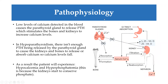Normally, low levels of calcium detected in the blood trigger a negative feedback mechanism, and the parathyroid gland is stimulated to release parathyroid hormone. This acts on the bones, kidney, and gut, resulting in higher calcium levels to reinstate a homeostatic state. However, in hypoparathyroidism, the parathyroid hormone being released is not in the right amount.